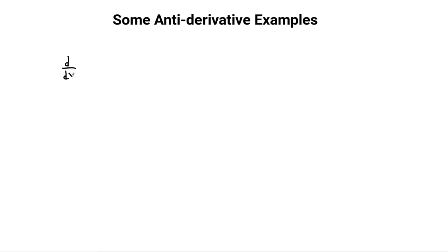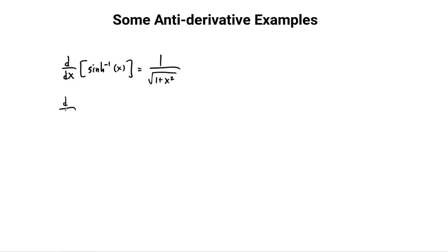I'm just going to write these down — you should be able to compute all of these yourselves. So sinh inverse of x, I'll write them as inverse functions this time. The derivative of this one is 1 over the square root of 1 plus x squared. The derivative with respect to x of cosh inverse is very similar, but it's the ratio 1 over the square root of x squared minus 1.